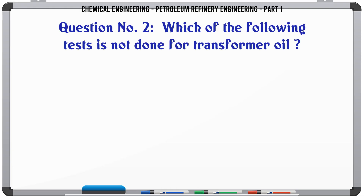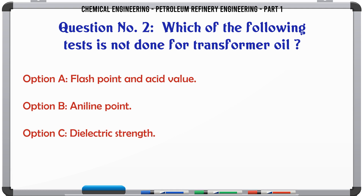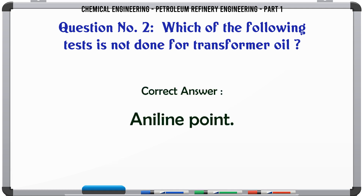Which of the following tests is not done for transformer oil? A. Flash point and acid value, B. Aniline point, C. Dielectric strength, D. Copper strip corrosion test. The correct answer is Aniline point.